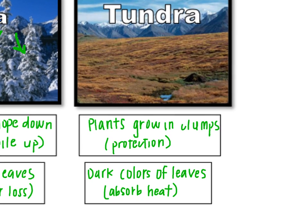The tundra is very, very cold — it's found at the tops of mountains above the tree line and in arctic areas. In the tundra, a lot of plants will grow in clumps, which protects them from high winds and cold weather. You'll also see a lot of plants that have dark colors — reds and browns — which allows them to absorb heat because it's very, very cold in the tundra.